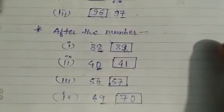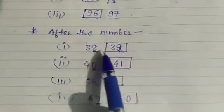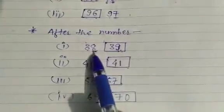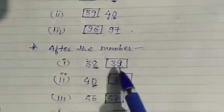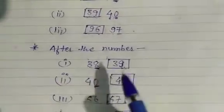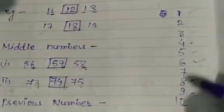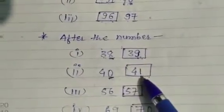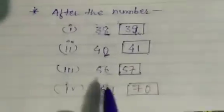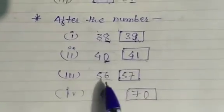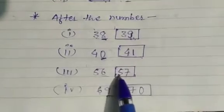Now: after the number. The number is 38, then a box — the number that comes after 38. The right place is 8, and after 8 comes 9. So the answer is 39. Next: after 40 — the ones digit is 0, and after 0 the counting restarts: 1 comes. So the answer is 41. Next: after 56, after 6 comes 7, so the answer is 57.